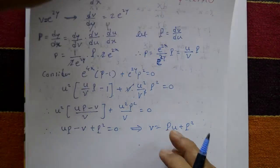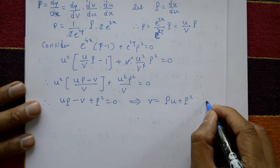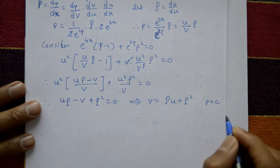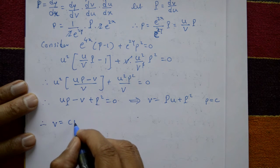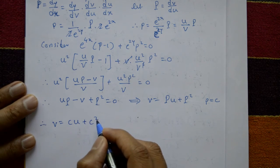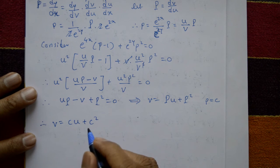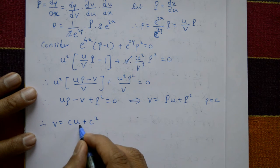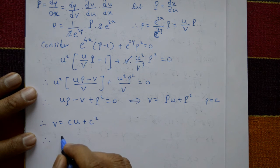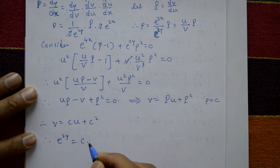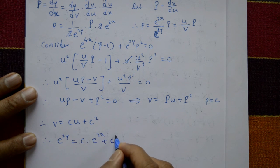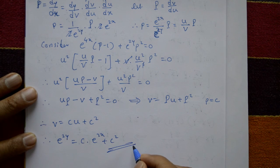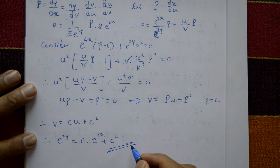Now put capital P equal to c. Therefore, v equals cu plus c square. Since v equals e raised to 2y and u equals e raised to 2x, the required general solution of the Clairaut equation is e raised to 2y equal to c into e raised to 2x plus c square.